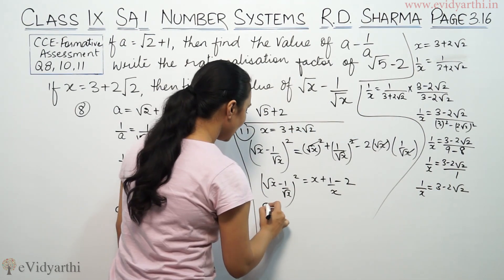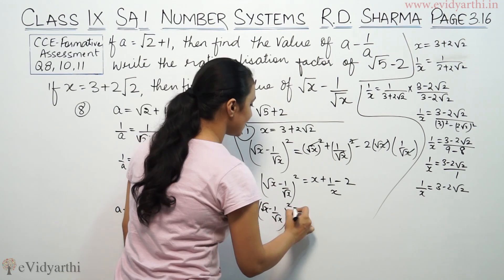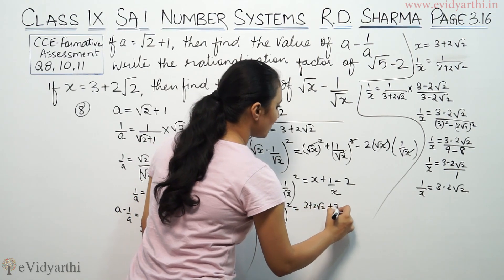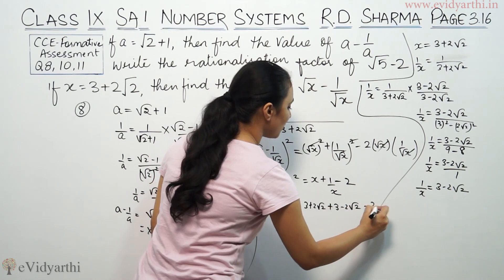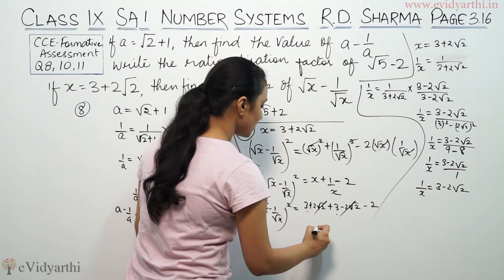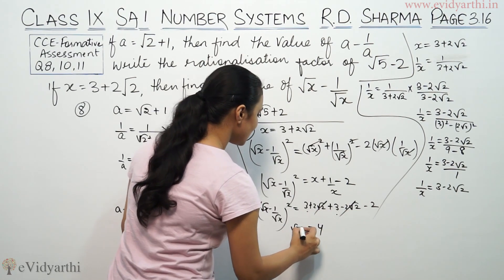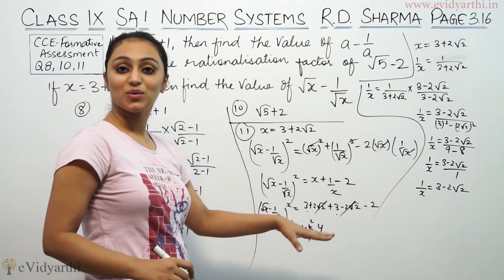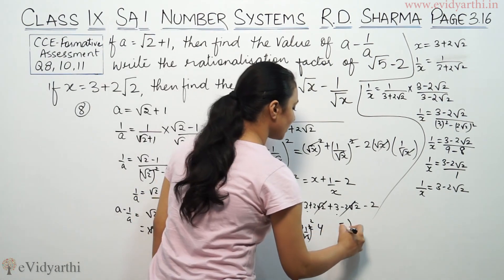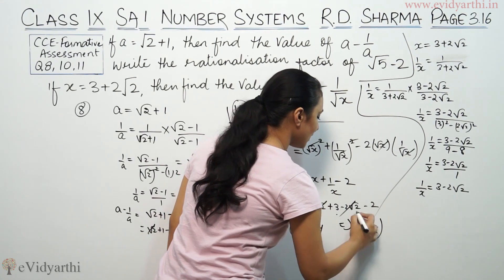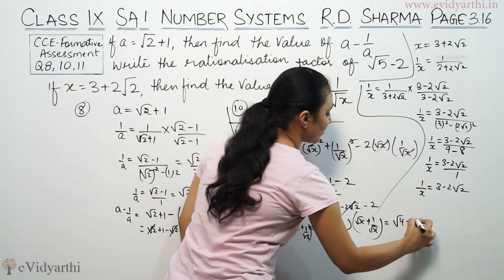So root x minus 1 by root x whole square equals x which is 3 plus 2 root 2, plus 1 by x which is 3 minus 2 root 2, minus 2. The root 2 terms cancel, 3 plus 3 is 6 minus 2 is 4. Taking the square root, root x minus 1 by root x equals root 4, that means 2.